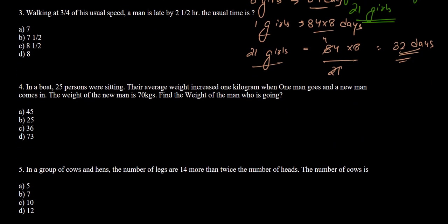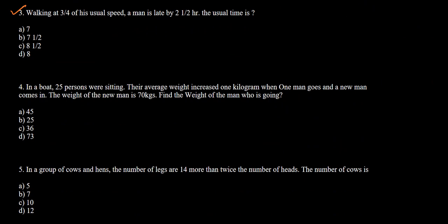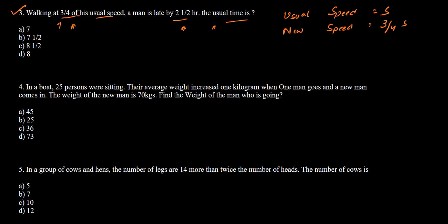Question 3 says: walking at 3/4th of his usual speed, a man is late by 2 and a half hours. We need to find the usual time the man takes. Let the usual speed of the man be s. The new speed is 3/4 of s, since he is walking at 3/4th of his usual speed. Let us assume the usual time to be t.